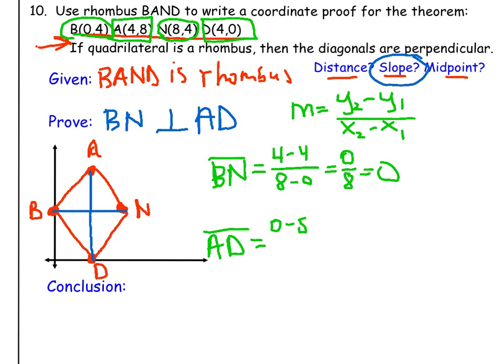And when I plug those values into the slope formula, 0 minus 8 over 4 minus 4, we get negative 8 over 0, which of course is undefined. You can't have 0 on the bottom of a fraction.